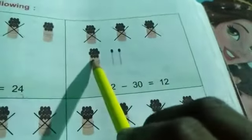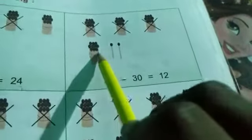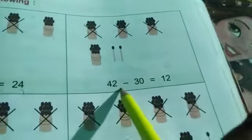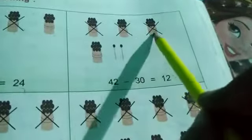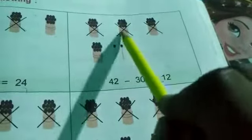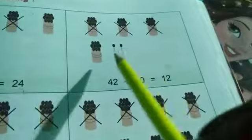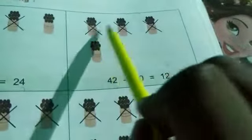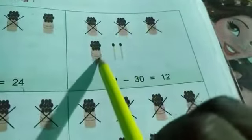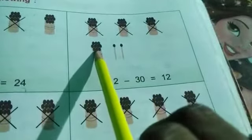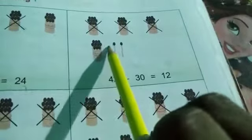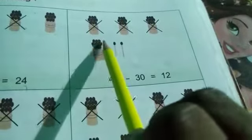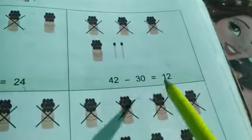Again: we are having 4 bundles of 10 and 2 single sticks — 40 plus 2 equals 42. We have minused 1 ten, 2 tens, 3 tens — meaning 30. 42 minus 30: we have cut 3 bundles. Counting what remains: 1, 2, 3, 4, 5, 6, 7, 8, 9, 10 plus 2 equals 12. So 42 minus 30 equals 12.